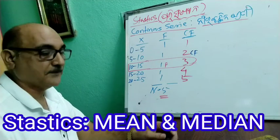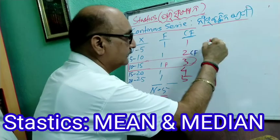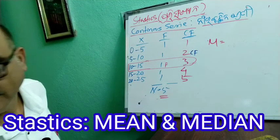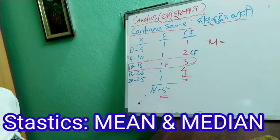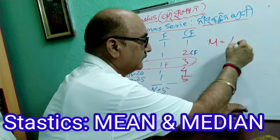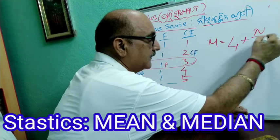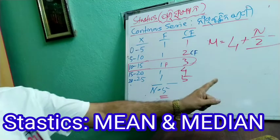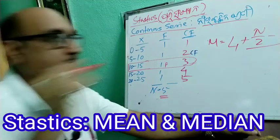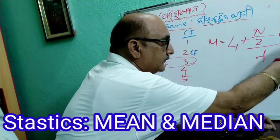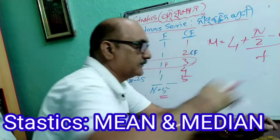So this way we are going to explain: M is equal to L1 plus N by 2, then L1 plus N by 2 minus CF by F, multiplied into I — you have one more class interval.